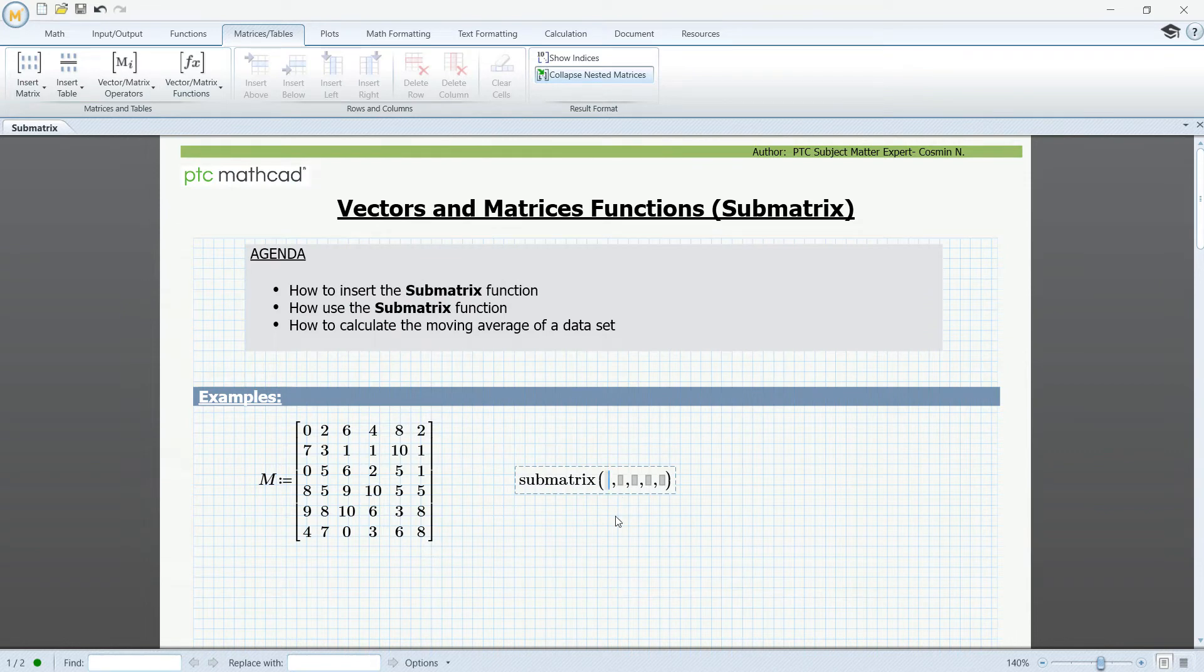The function requires five arguments, so if you type in the function using the keyboard don't forget to specify all five arguments. The first argument is the name of the array that we want to extract data for. In this example we have a 6 by 6 matrix called M, so we're going to type in here M.